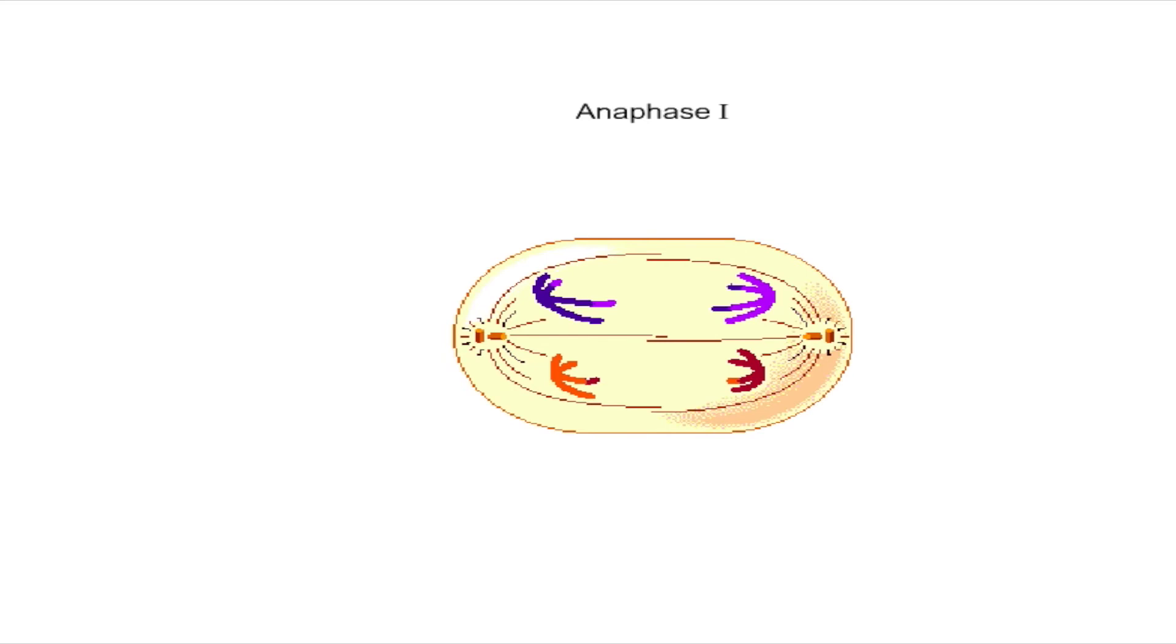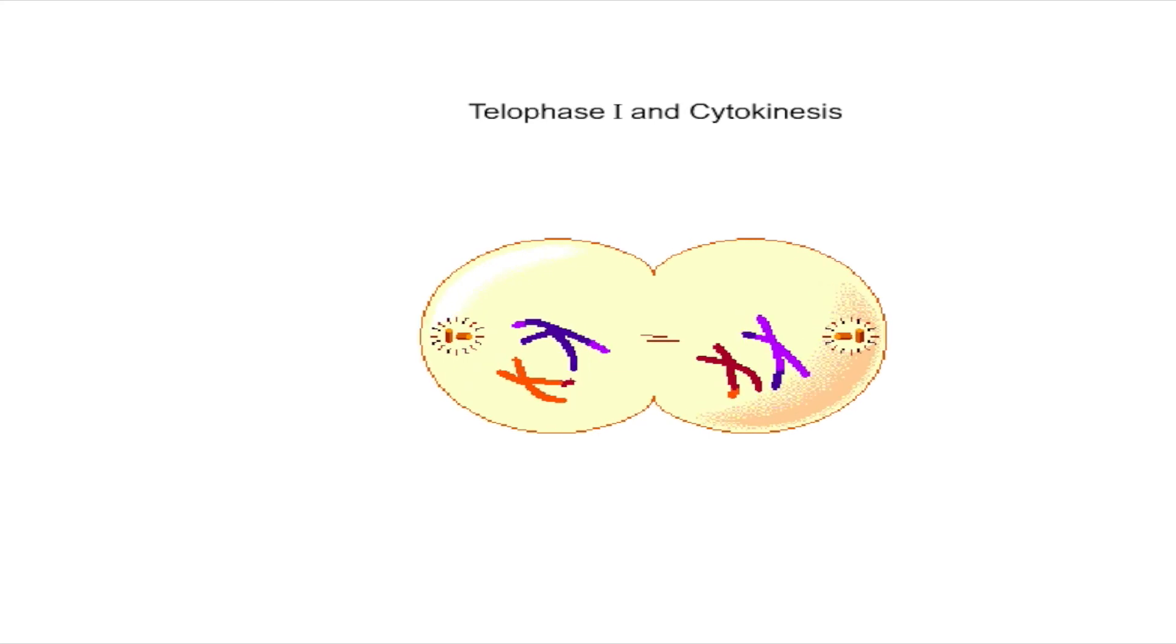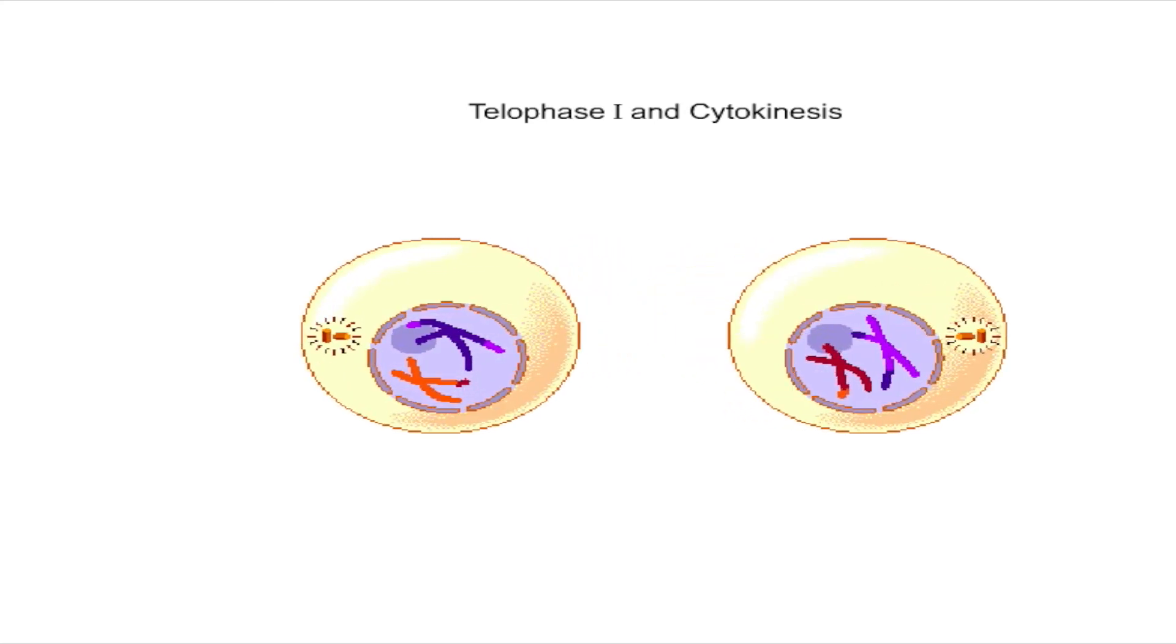A key difference between mitosis and meiosis is that sister chromatids remain joined after metaphase in meiosis one, whereas in mitosis they separate. During telophase one, a nuclear envelope forms around each chromosome set. The spindle disappears and cytokinesis usually follows.